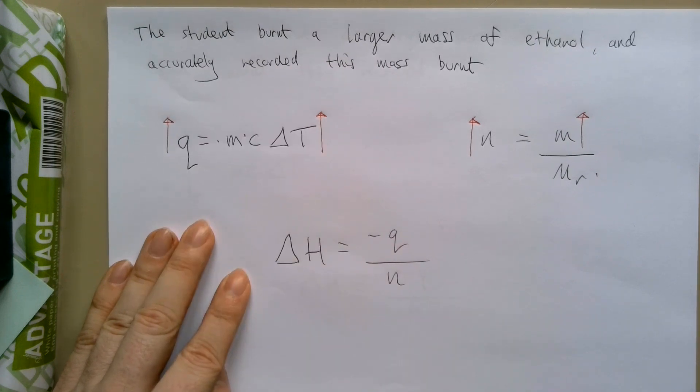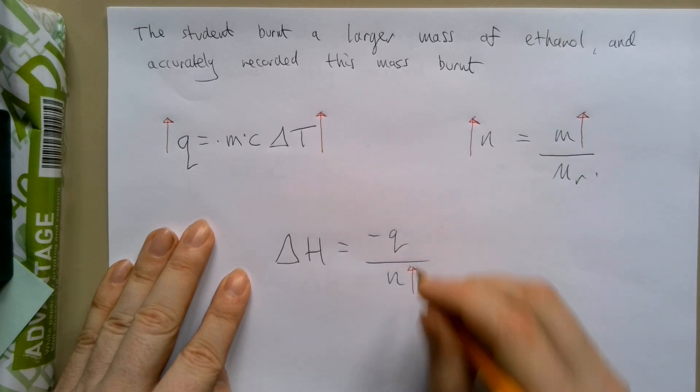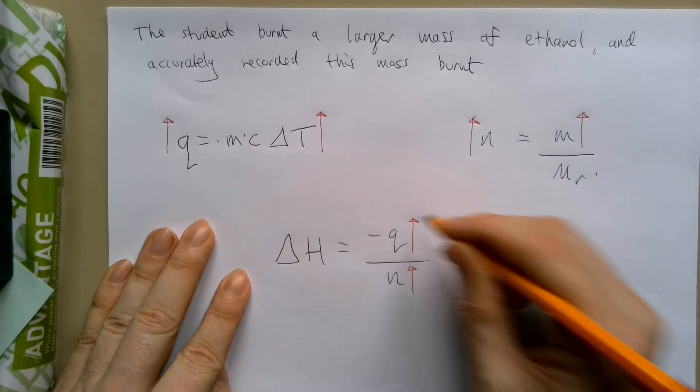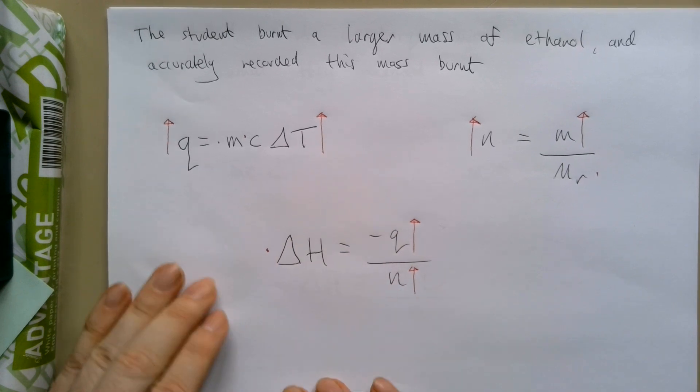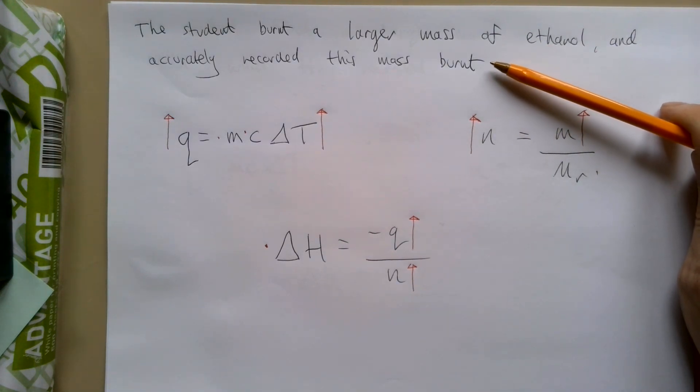So all in all, by burning a larger mass of ethanol, we have increased the moles and we have increased the heat change. And so these two effects will cancel out, and so our calculated delta H value will be identical. So it does not matter what mass of ethanol you burn in this experiment, so long as you accurately record what that mass is.